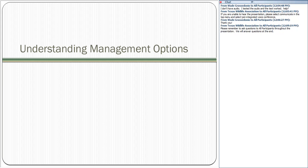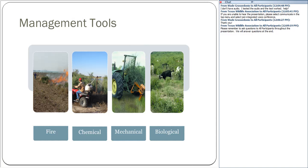Once we know what brush or weed issue we're dealing with, how do we decide which management option is best? We have four main tools in our toolbox: prescribed fire, chemical management using herbicides, mechanical management, and biological control. Biological control could include using goats or cattle to utilize grass that wildlife isn't using, which can benefit the land — or even releasing an insect to push back a certain plant species.